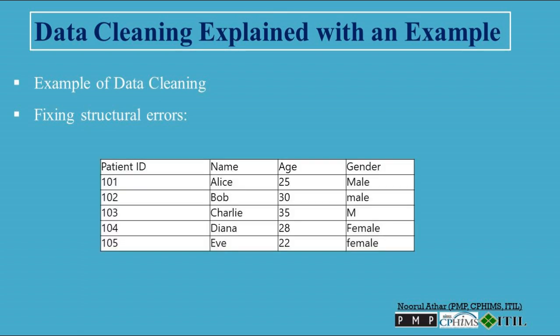Here's a table illustrating the dataset with structural errors in the gender field. In this example, the gender data is inconsistent, with variations such as male, Male, and M for male, and female and Female for female. These should be standardized to a single format, such as male for all male entries and female for all female entries, to eliminate structural errors.